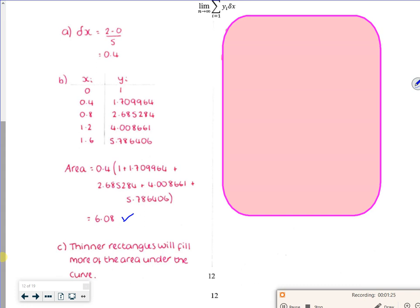Then C says, use the diagram or otherwise, explain why increasing the number of rectangles and reducing their width gives a more accurate estimate. So with thinner rectangles, you can fit more in.